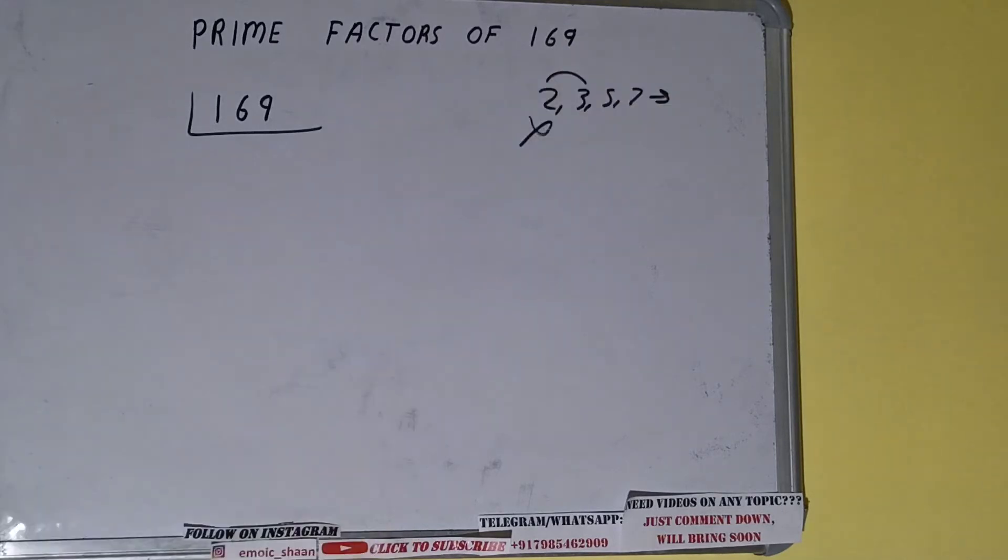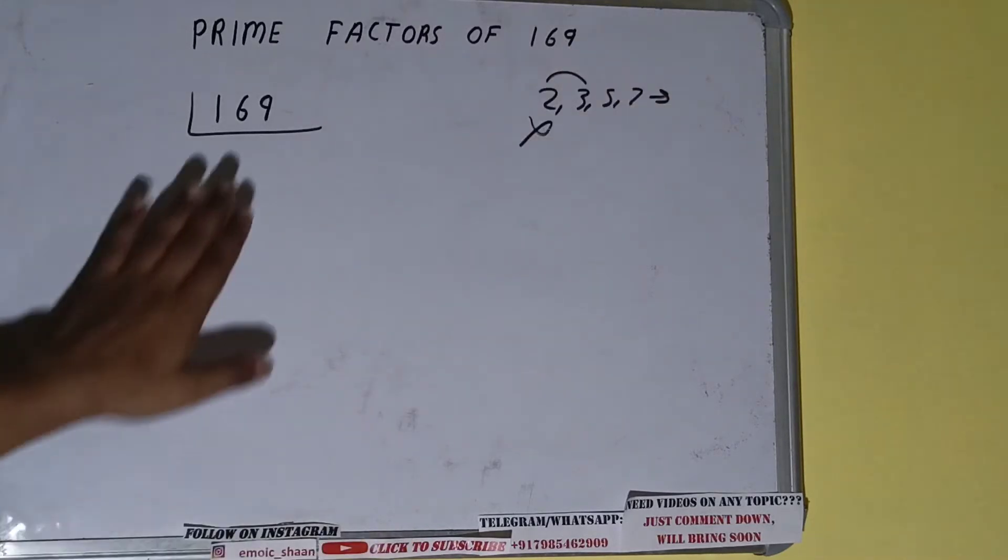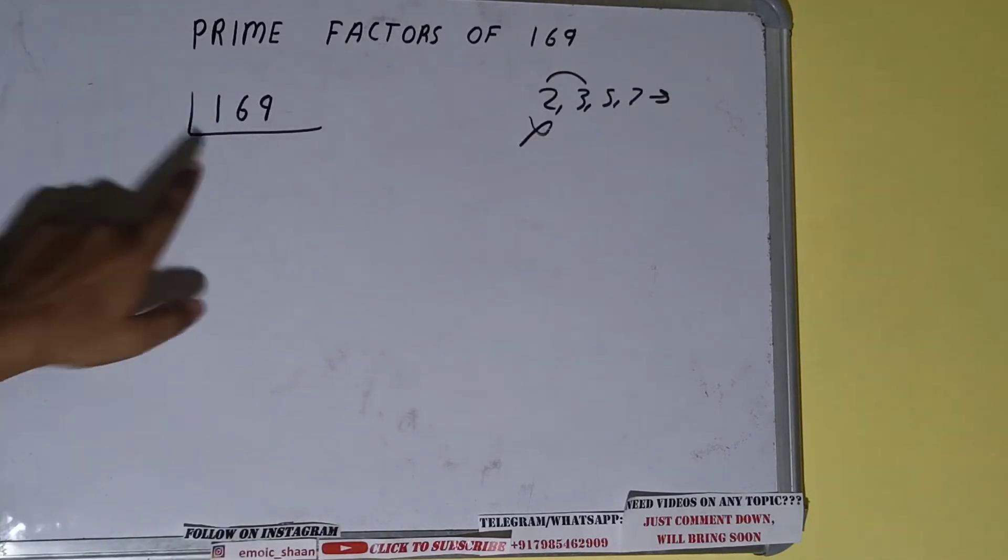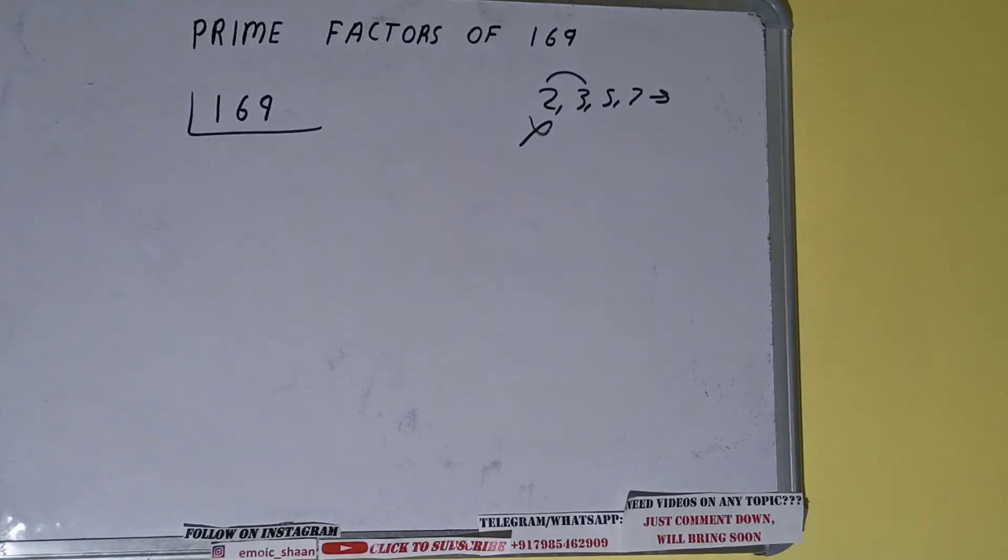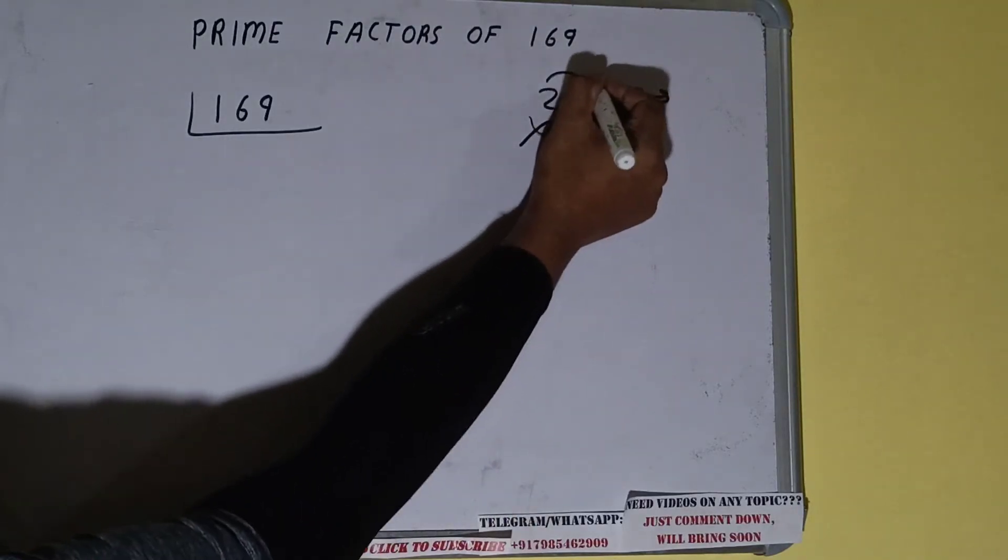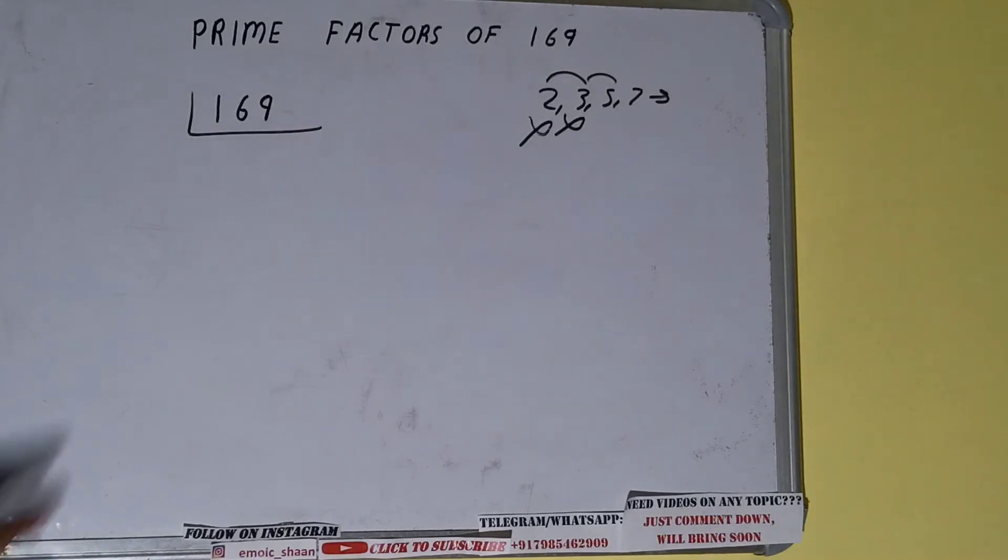That is 3. Is 169 divisible by 3? If we check, 3 fives of 15, one nine - not divisible by 3. So we'll go to the next lowest one, that is 5. The last digit is neither 5 nor 0, so it is not divisible by 5 as well.